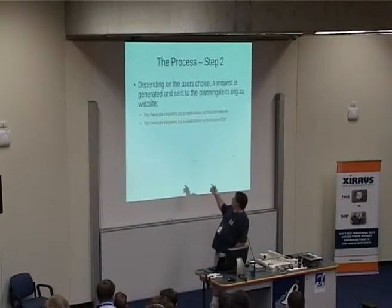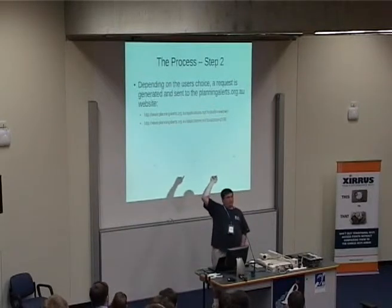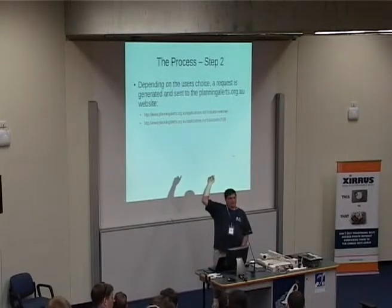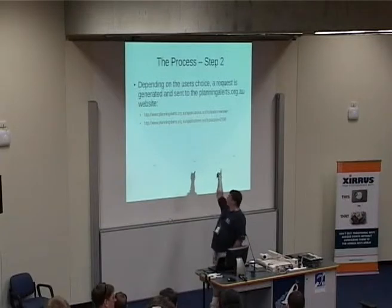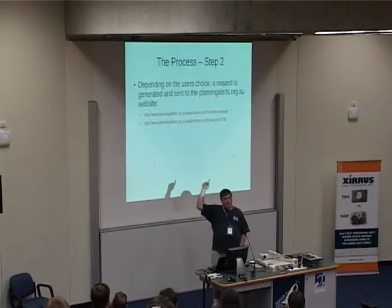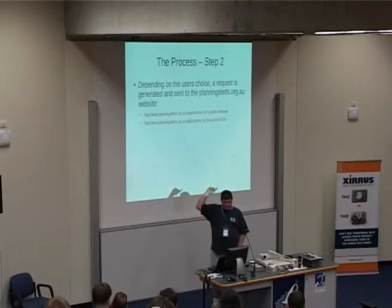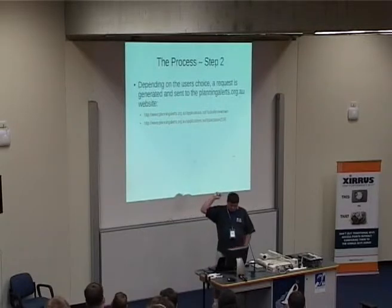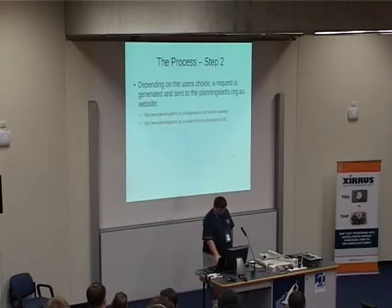Here are a couple of examples. You have the suburb type, which is meant to have a state variable attached on the end, and also a postcode type. There are others including council area, which is formatted slightly differently — but those are two examples of what is sent.